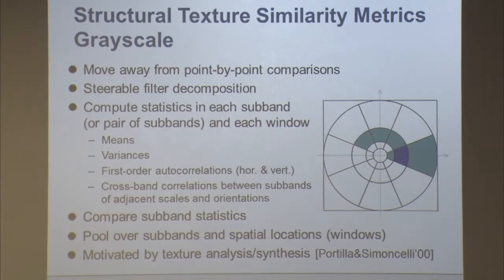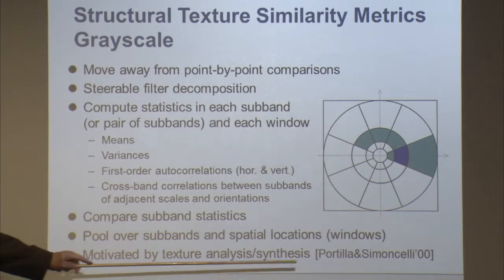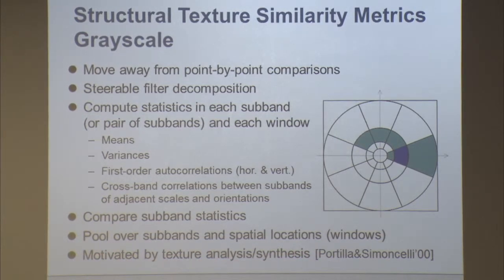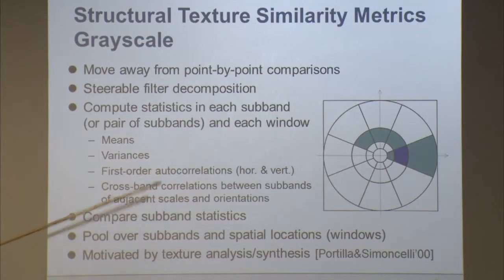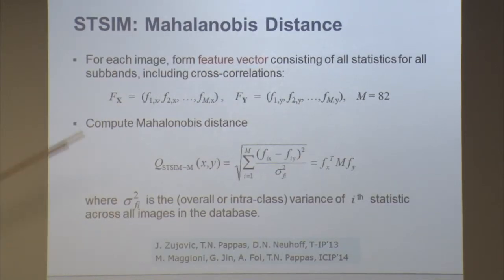A lot of this work was motivated by texture analysis and synthesis. A key publication by Portilla and Simoncelli uses about 700 parameters to characterize textures for synthesis, but for similarity we don't need reconstruction. Our theory is that maybe 50 to 70 parameters will do — that's the order we're using.